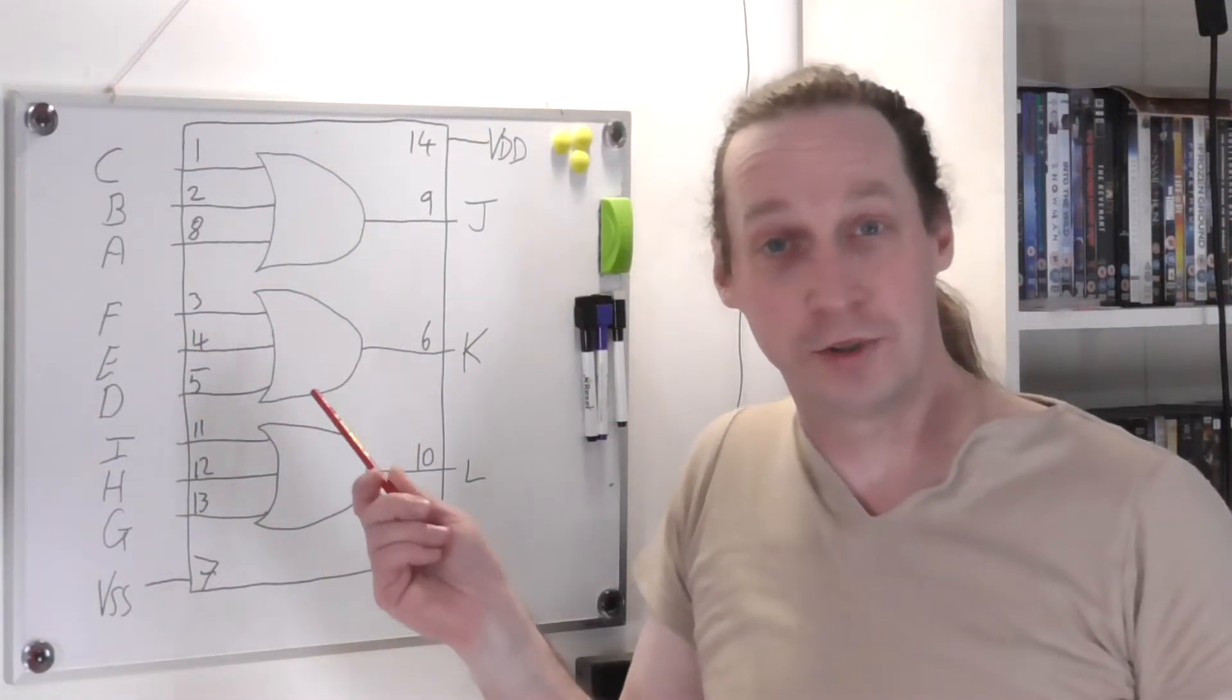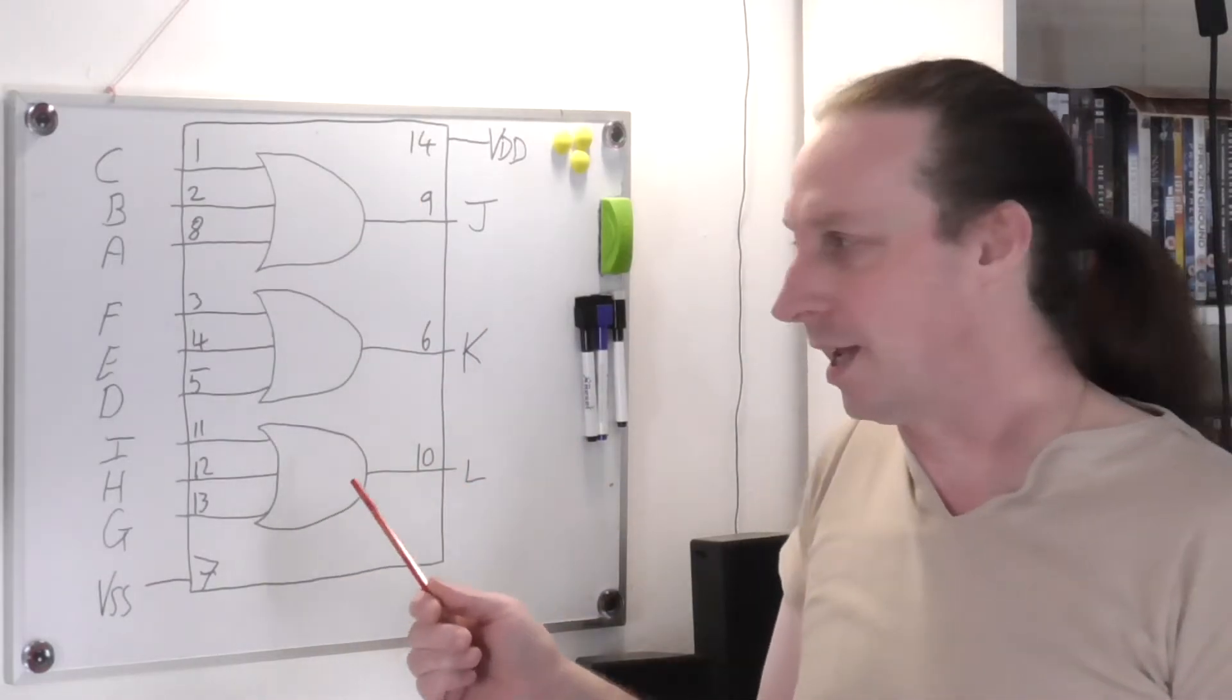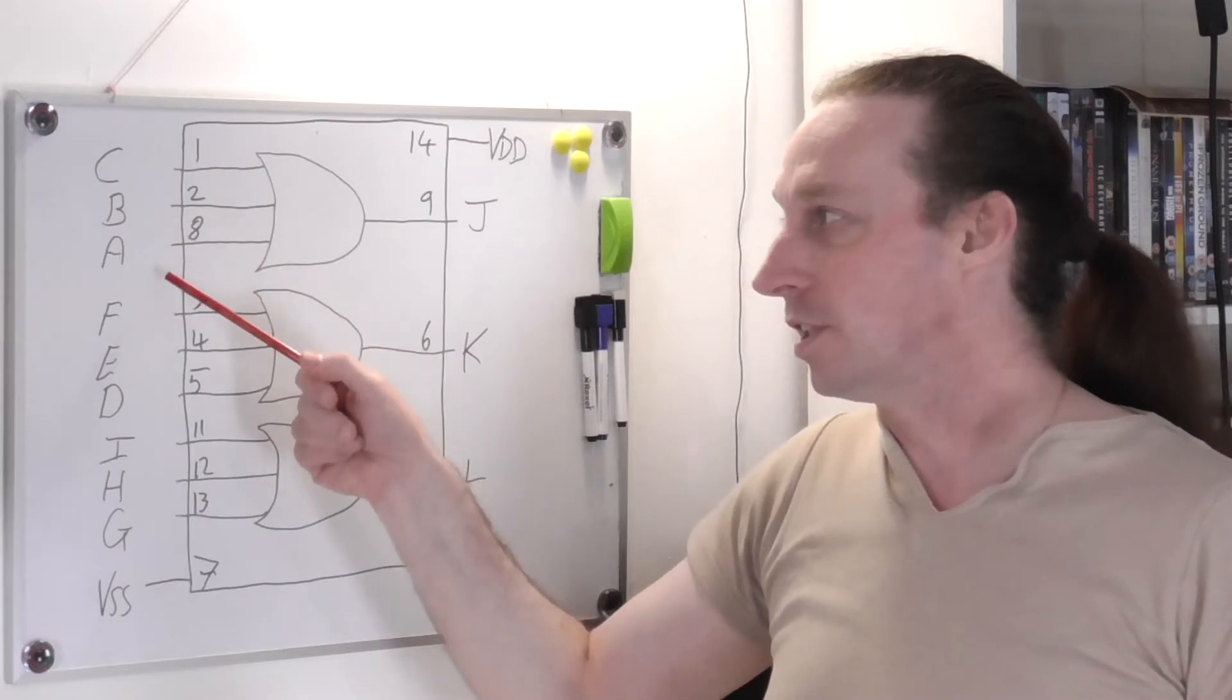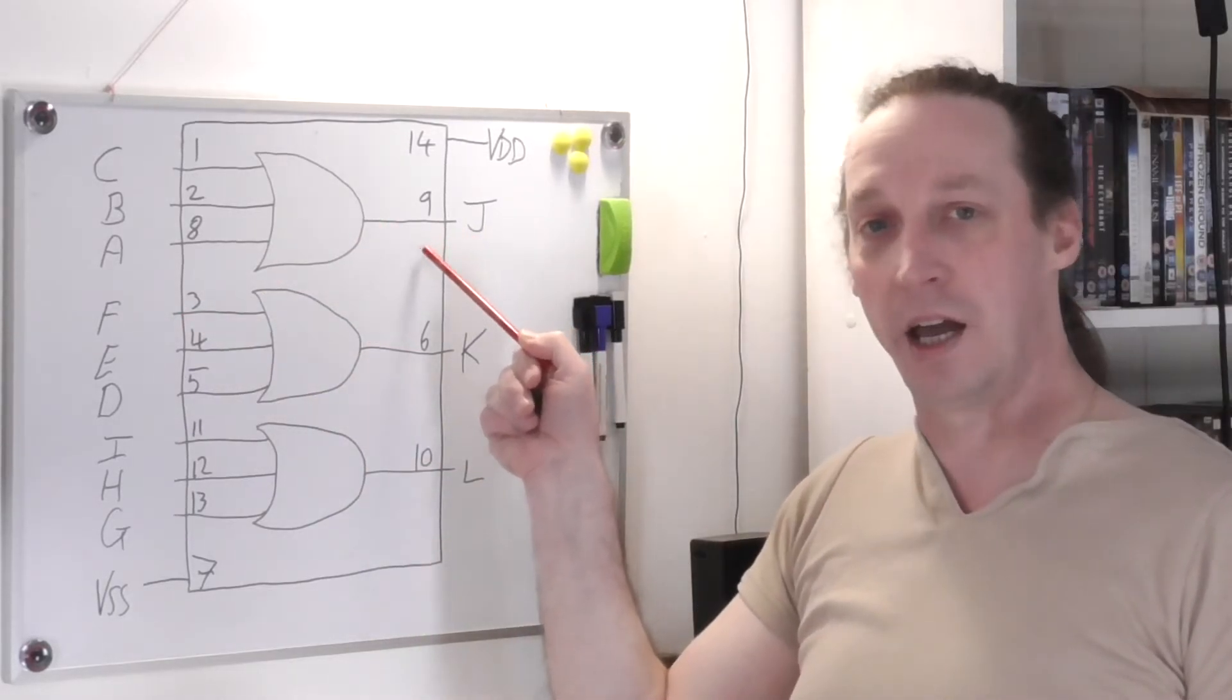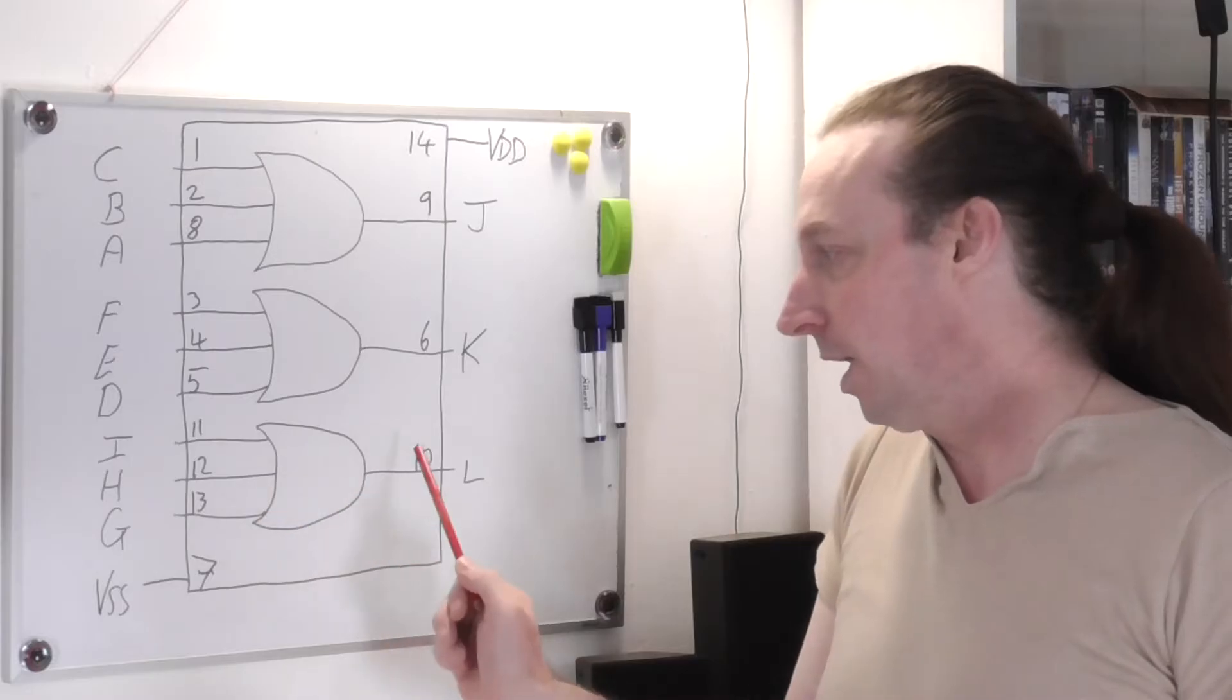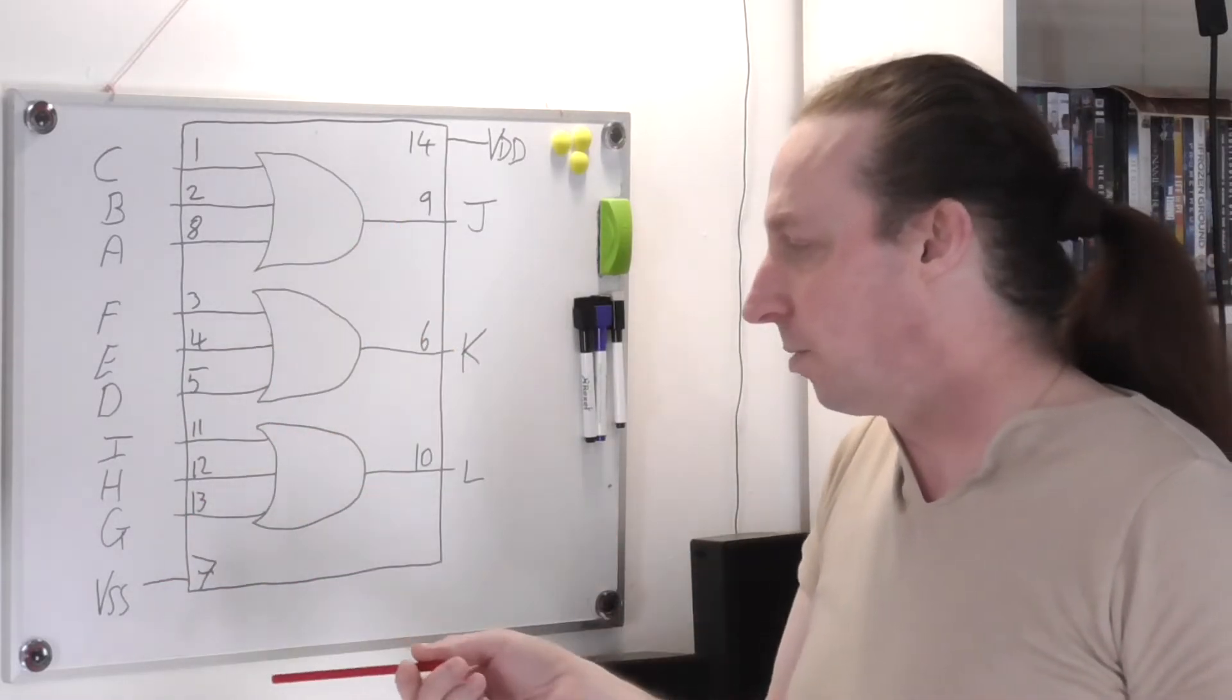So here we have the diagram on the whiteboard. Basic setup. I've drawn it out as it would be done in the datasheet rather than chip layout. Three gates, three OR gates, three inputs per gate. Now they always have this strange lettering system. Pins 1, 2, 8 is C, B and A with the output being on pin 9, so that's J. Now I'm going to use this one on the actual breadboard, just easier to set up for 11, 12 and 13. Output on pin 10 as they put it, it's I, H and G with the output being L. So that's one I'm going to be using.